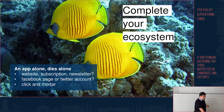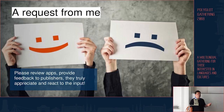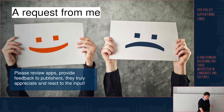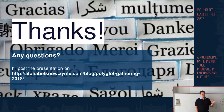Don't forget to provide feedback to publishers — they really appreciate it, and that will allow them to improve their products. As you develop your app, feedback is also what you need to figure out what's going on and how to improve what you deliver. You'll find the presentation on the AlphabetsNow website in the blog section under the polyglot gathering. Half an hour is a very short amount of time to cover all those subjects — if you have questions or want to know more, feel free to reach out.